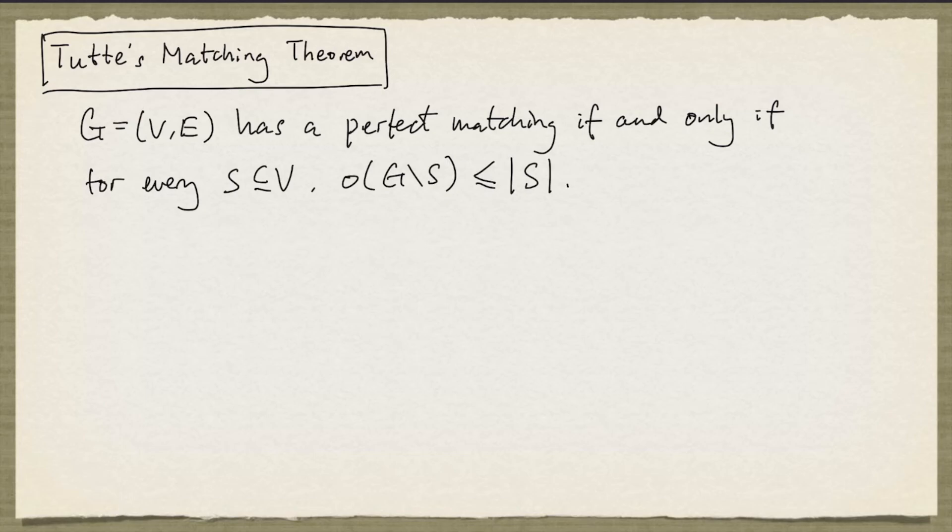So G drop S is the graph obtained from G by removing all the nodes in S and all the edges incident to a node in S.